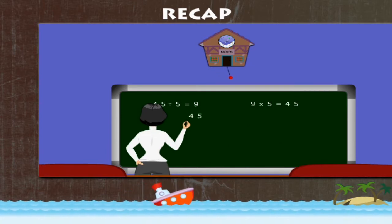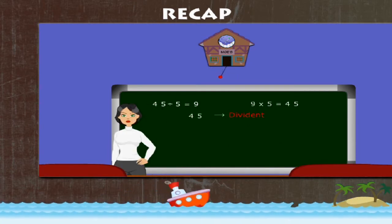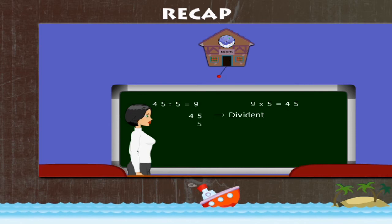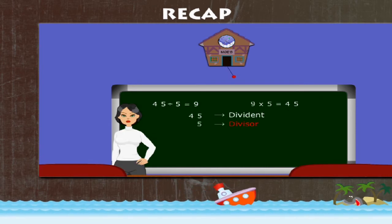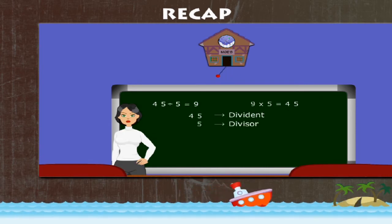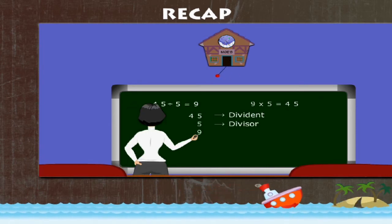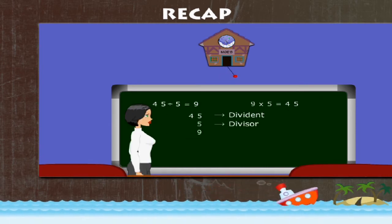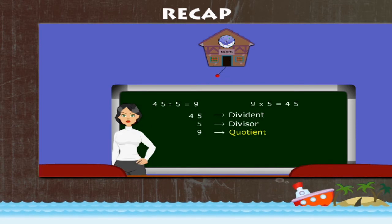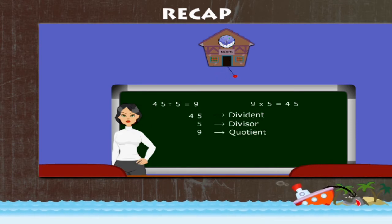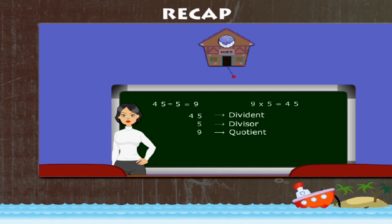45 here is called the dividend. 5 is called the divisor, and the answer 9 is called the quotient. Don't forget these terms. Ma'am says they are important.